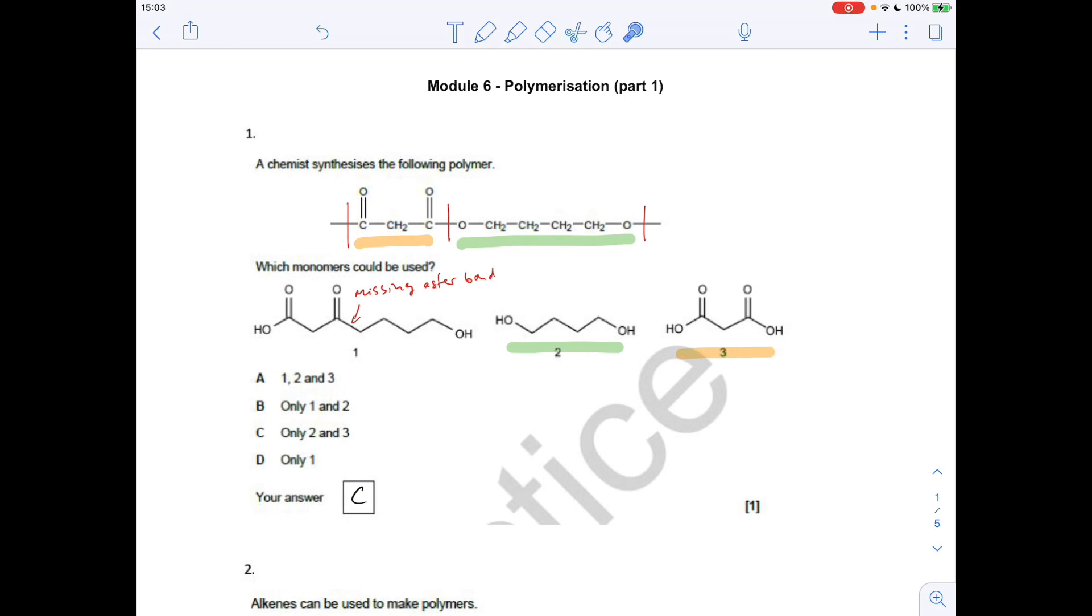To create the orange part, we'd need this monomer here. And to create this green part, we'd need this monomer here. So only two and three would actually create this polymer, so the answer is C.